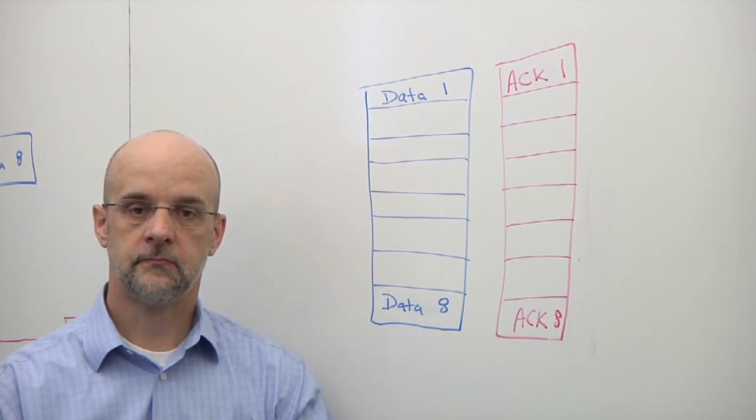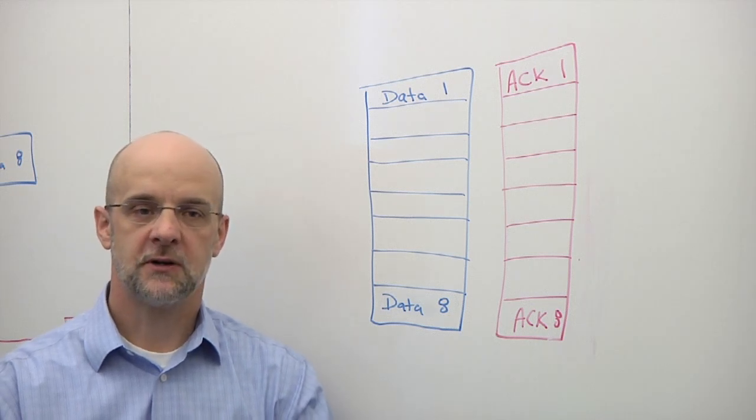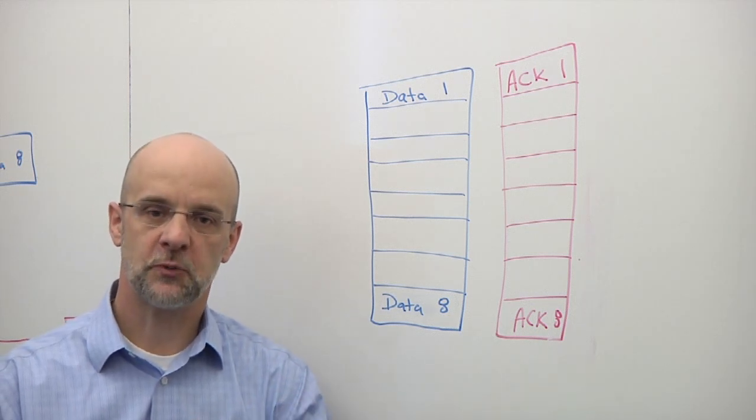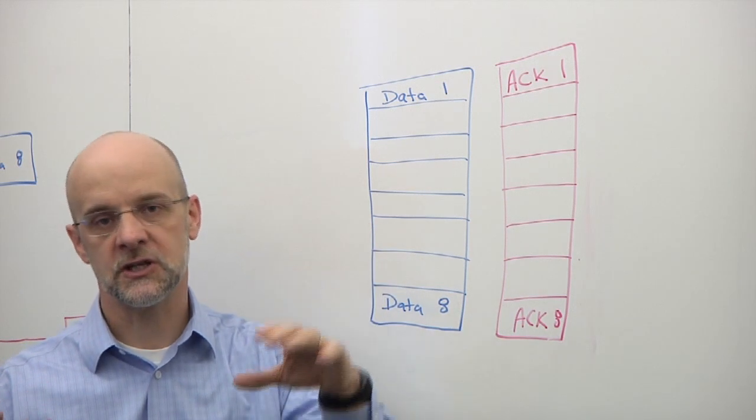And so, you talked about OFDMA. You also mentioned multi-user MIMO. What is that? Yeah, multi-user MIMO. MIMO is multiple input, multiple output. That's talking about the number of spatial streams going into a channel.